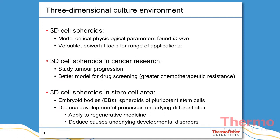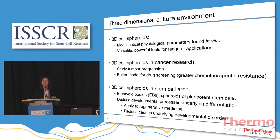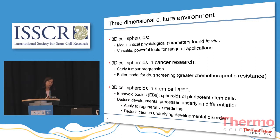Since cell spheroids represent very critical physiological parameters found in vivo, such as the multicellular architecture and barriers to mass transport, they represent very versatile and powerful tools which can be applied to a range of different applications. In cancer research, they are applied to study tumor progression, and they also serve as very good models to screen drugs, as they show greater chemotherapeutic resistance compared to the same cells in a monolayer. They are also very valuable to the area of stem cell research.